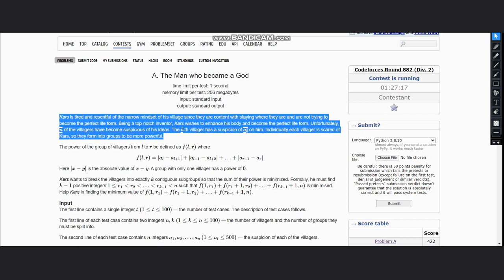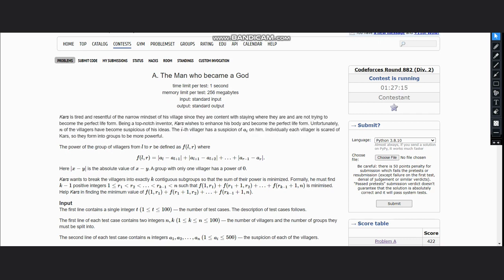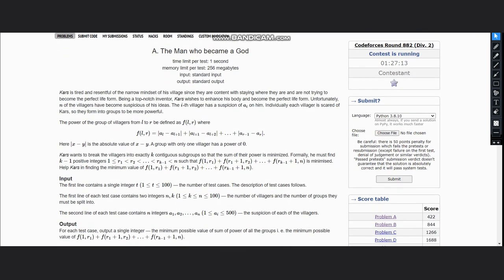The power of a group of villagers from L to R is defined as a function F(L, R) where it is the absolute difference between the elements. Here, mod of x minus y is the absolute value of x minus y.